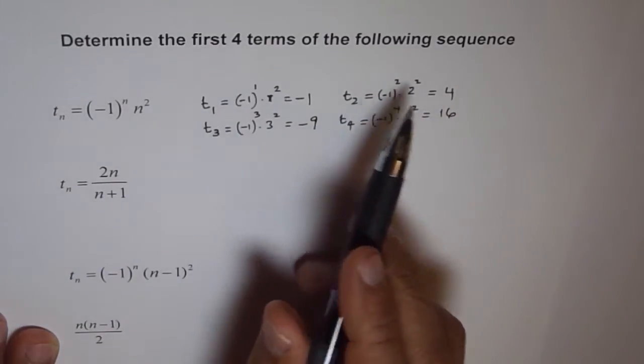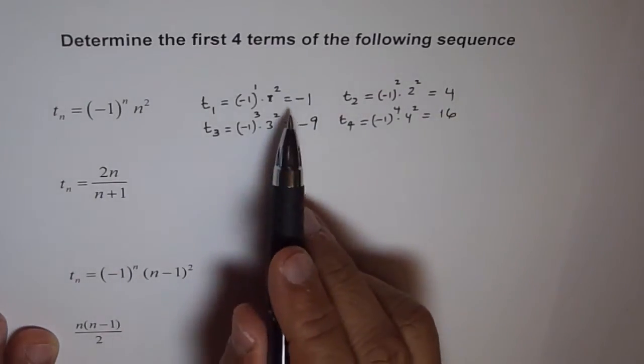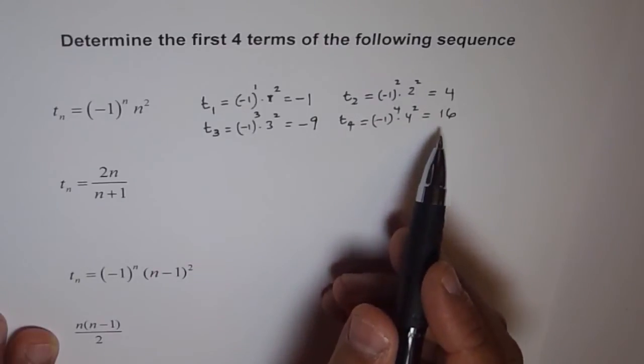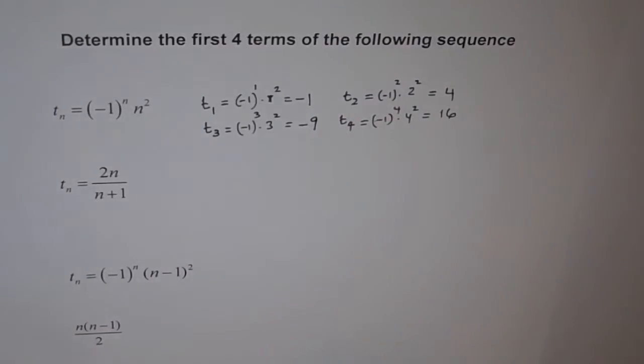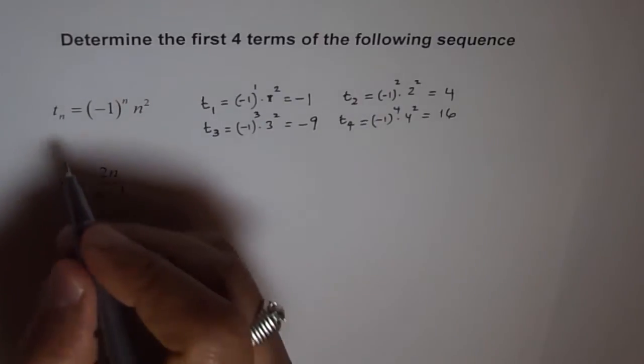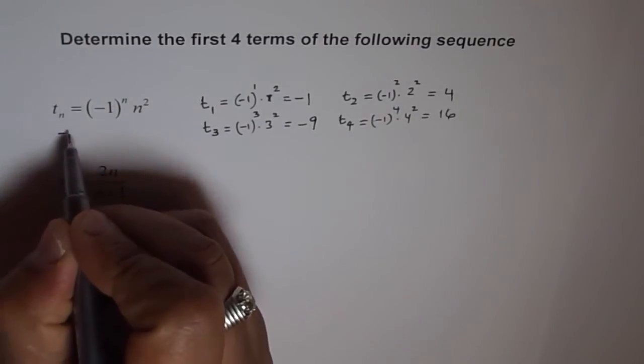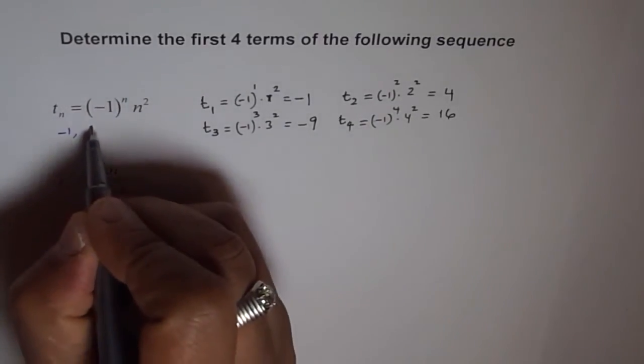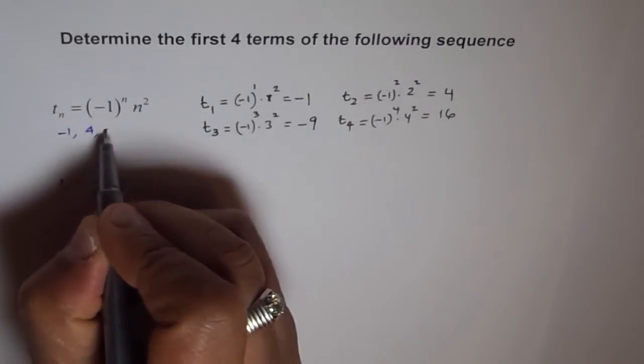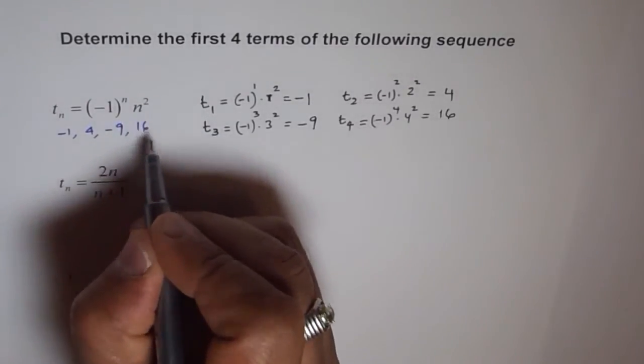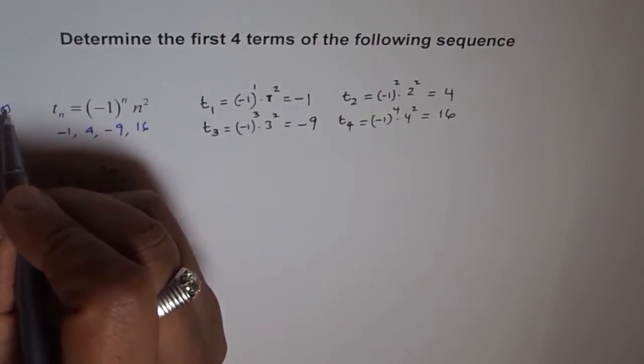So, the first 4 terms for our sequence are minus 1, 4, minus 9 and 16. So, we can write these terms here. We say the first 4 terms are minus 1, 4, minus 9 and 16. So, that's our question 1.